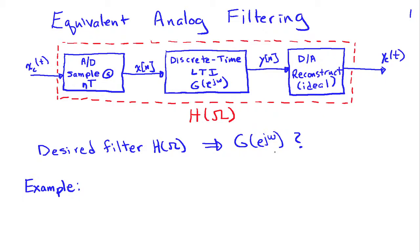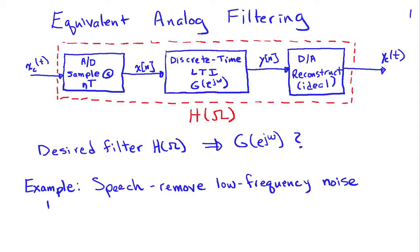Let's take a simple example. Suppose I have a speech signal and what I'd like to do is remove low-frequency noise — specifically, frequencies less than 100 Hz. So I want to generate a high-pass filter that passes signals above 100 Hz. The question is: how do we do this?